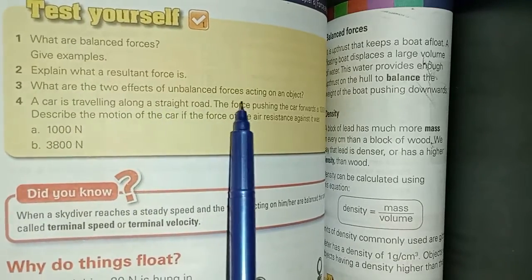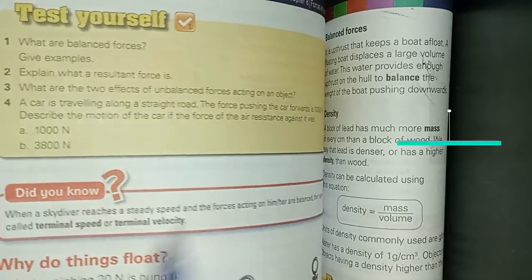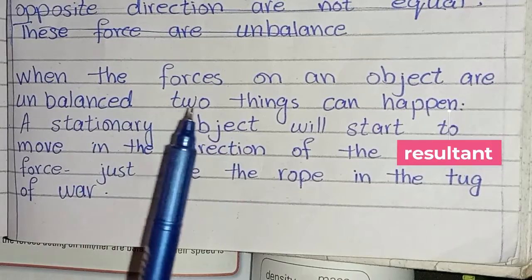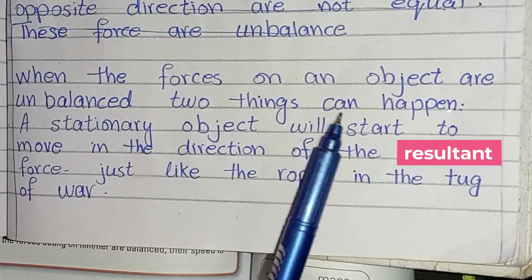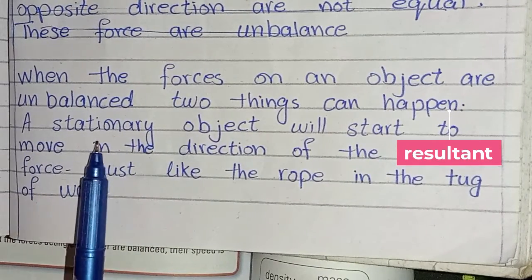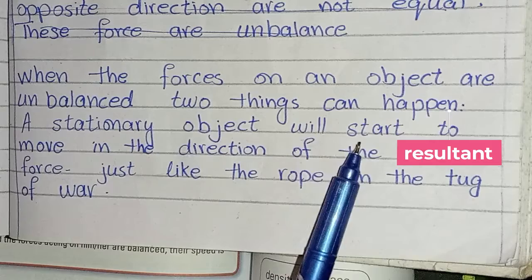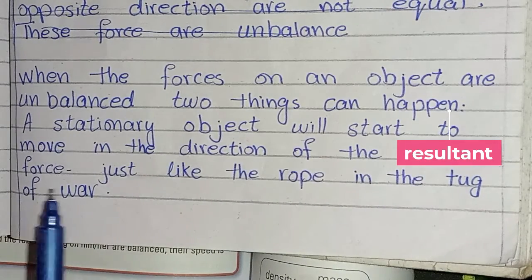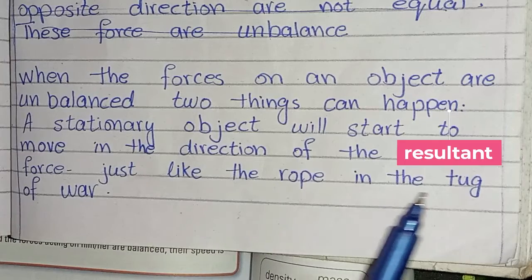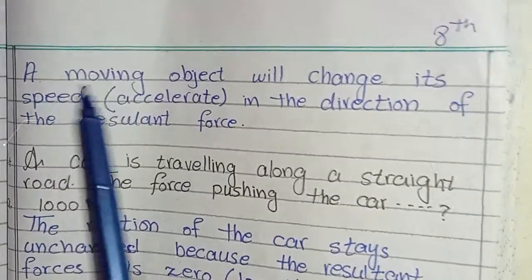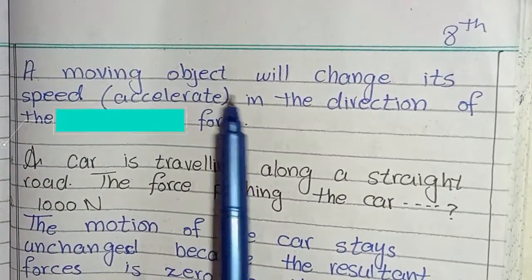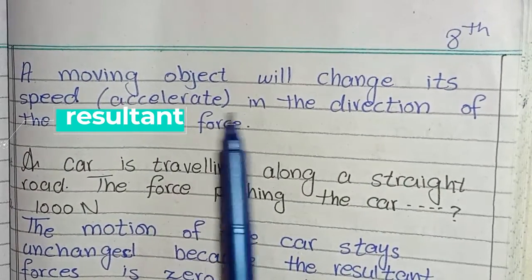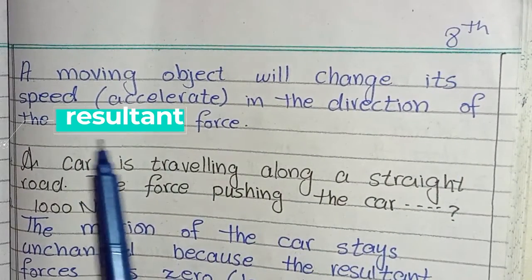Third question: What are two effects of unbalanced forces acting on an object? When the forces on an object are unbalanced, two things can happen. A stationary object will start to move in the direction of the resultant force, just like the rope in a tug of war. A moving object will change its speed — it will accelerate in the direction of the resultant force.